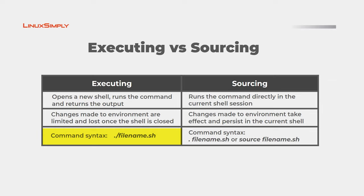The basic command syntax for executing a script is using the dot-slash notation — you write dot-slash then the name of the script. Whereas when you source the script you have two alternatives: you can use the dot notation, or you can use the source command to source the script. Now I will demonstrate three examples of sourcing a bash script in the Ubuntu terminal, so let us see it in detail.